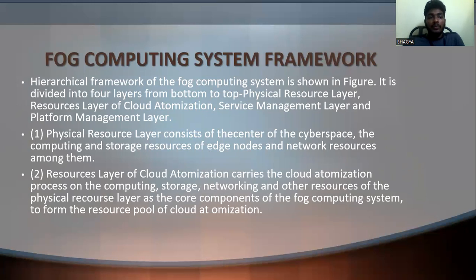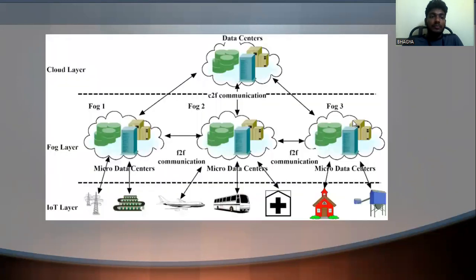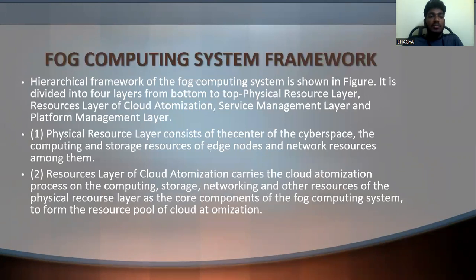Now the first topic: fog computing system framework. Since a fog computing system is needed, there are four types of layers. The hierarchical framework of this fog computing system is shown in the figure below. It is divided into four layers: from bottom to top — physical resource layer, resource layer of cloud automation, service management layer, and platform management layer. Let's discuss all these four layers.